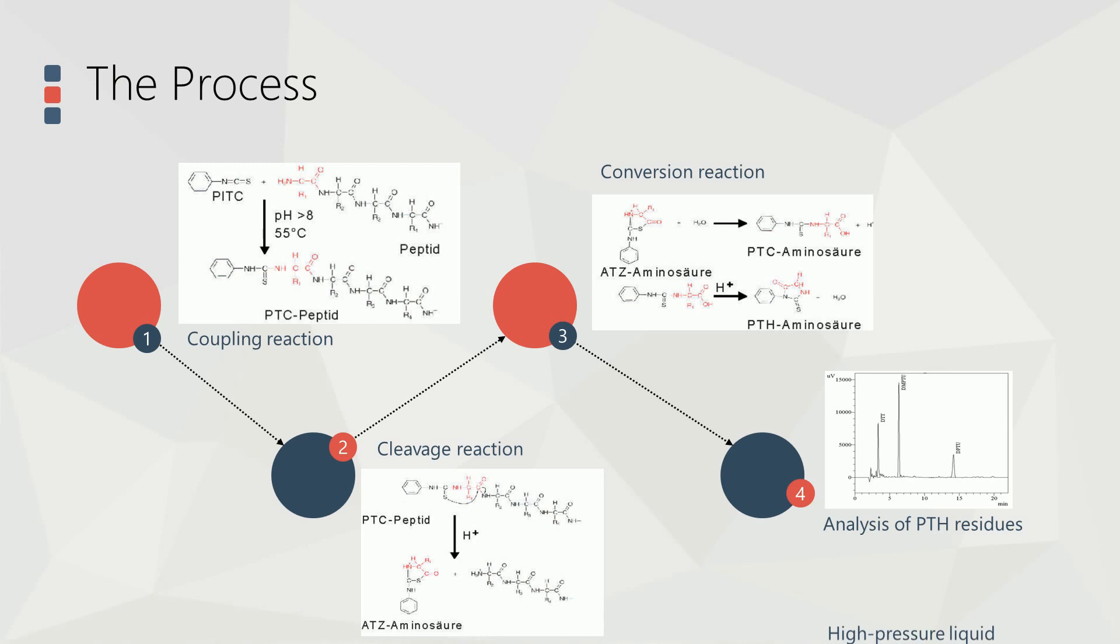High-pressure liquid chromatography provides a sensitive means of distinguishing the various amino acids. Gas-phase sequencers can analyze picomole quantities of peptides and proteins.